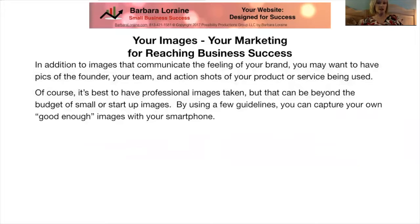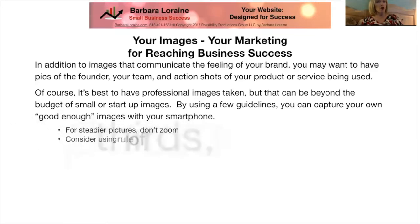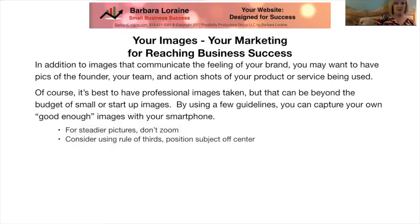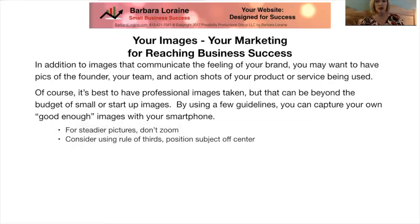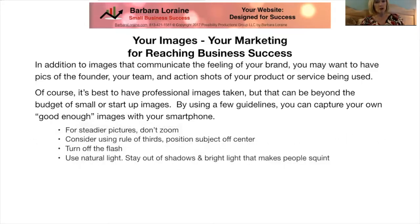It's best to have professional images taken, but that can be beyond the budget or timing of smaller startup companies. By using a few guidelines, you can capture your own good-enough images with your smartphone. For steadier pictures, don't use zoom. Consider using the rule of thirds, which means that the subject of the image is off to the side instead of in the center. This is particularly useful if you want to be able to put text off on the side — you don't want to have text going over your founder's face. Turn off the flash. Use natural light.